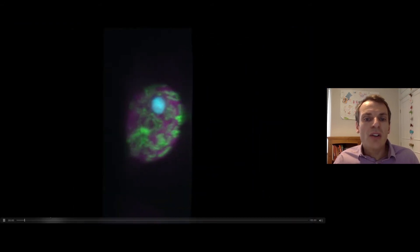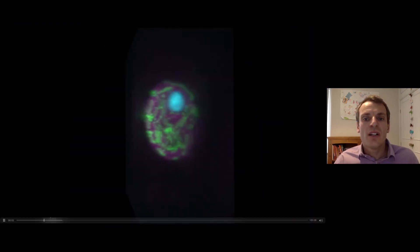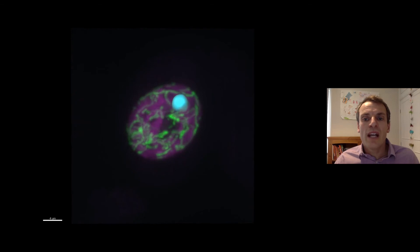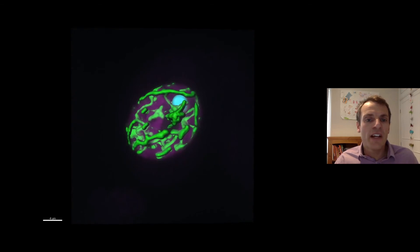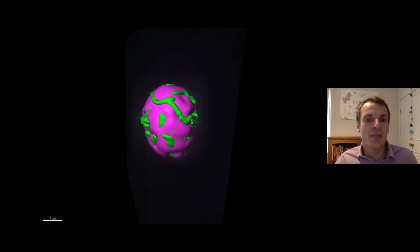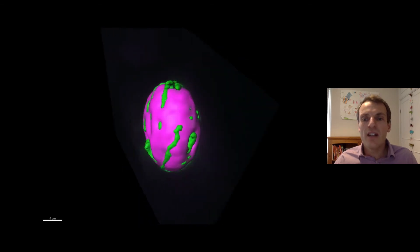This is now looking at the pyrenoid, shown in blue, in a living cell. It forms a sphere within the chloroplast, shown in magenta. In green are the mitochondria.